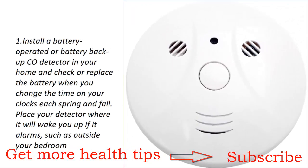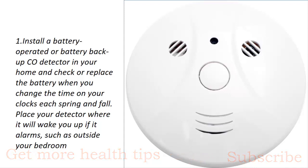How can I prevent CO poisoning in my home? One: Install a battery-operated or battery-backup CO detector in your home and check or replace the battery when you change the time on your clocks each spring and fall. Place your detector where it will wake you up if it alarms, such as outside your bedroom.